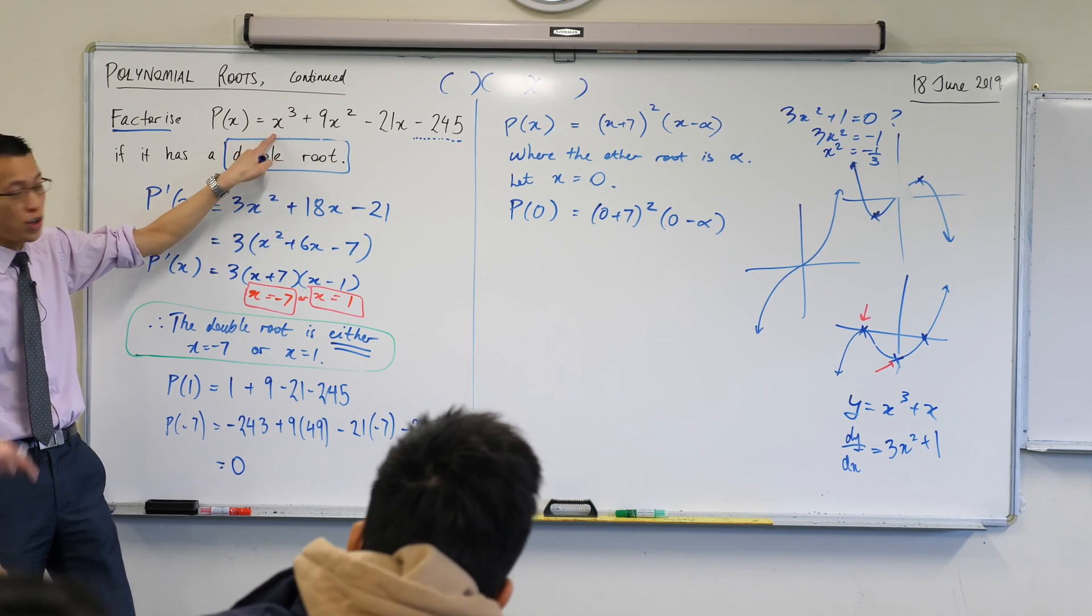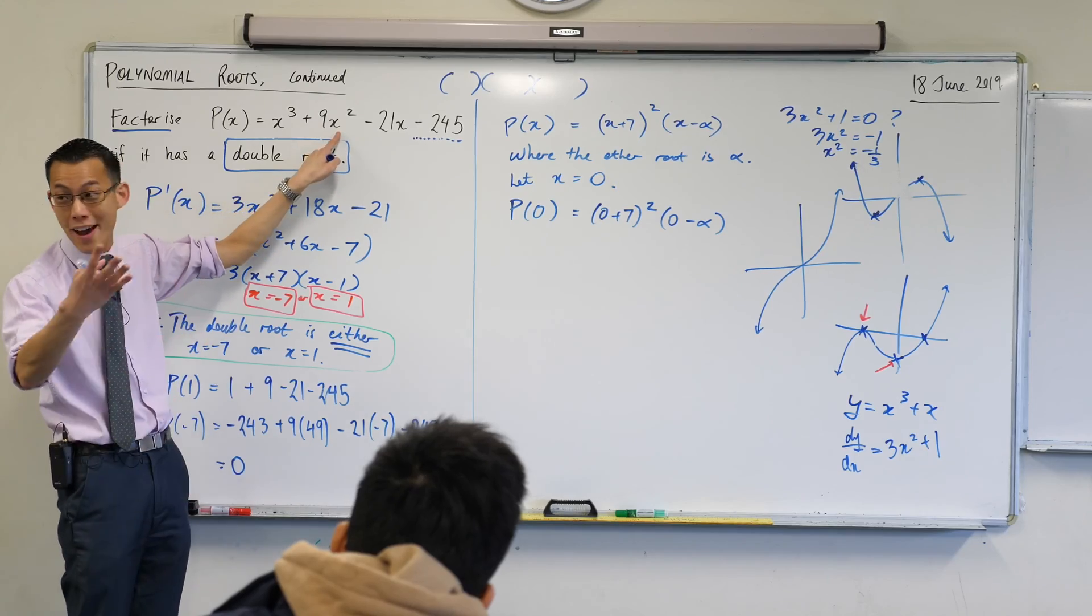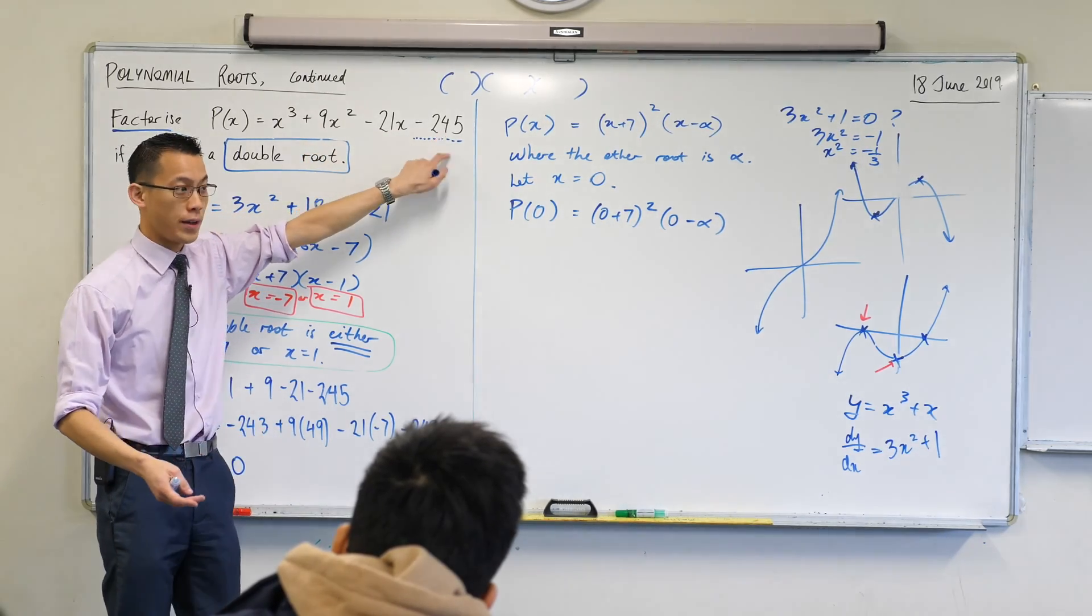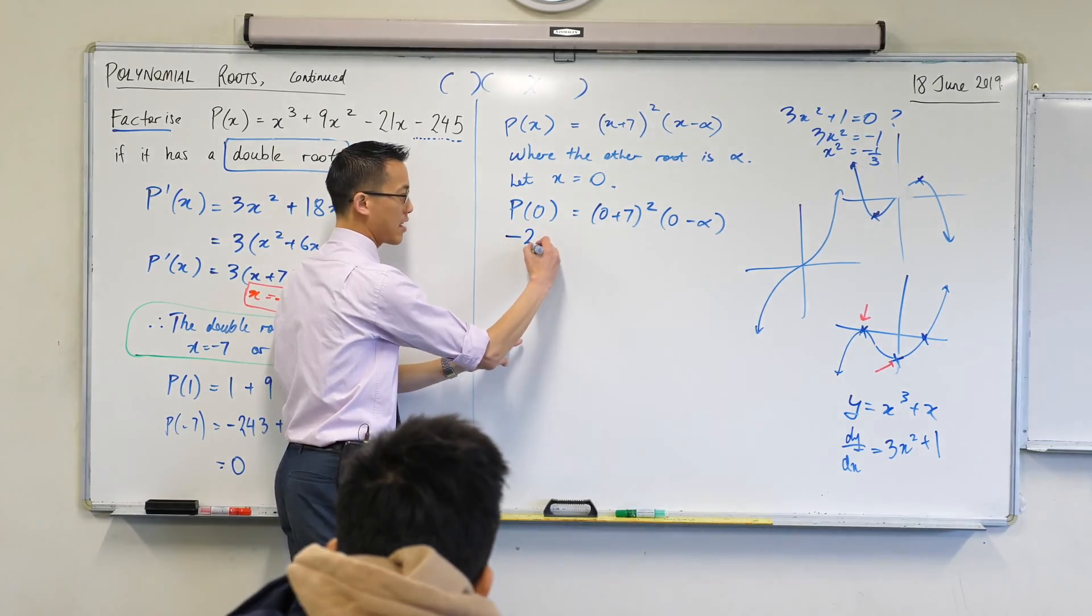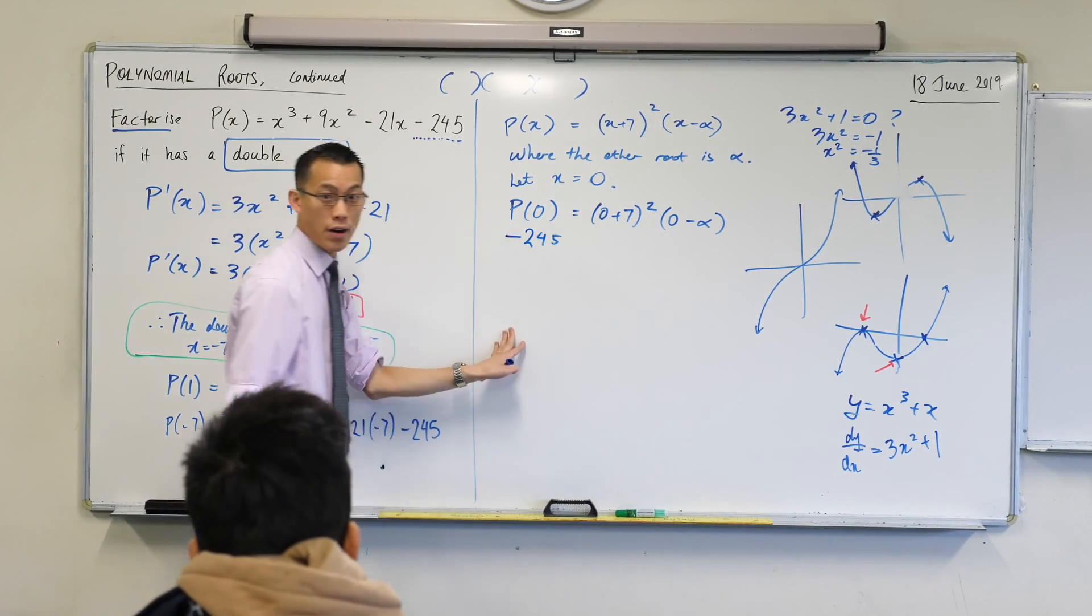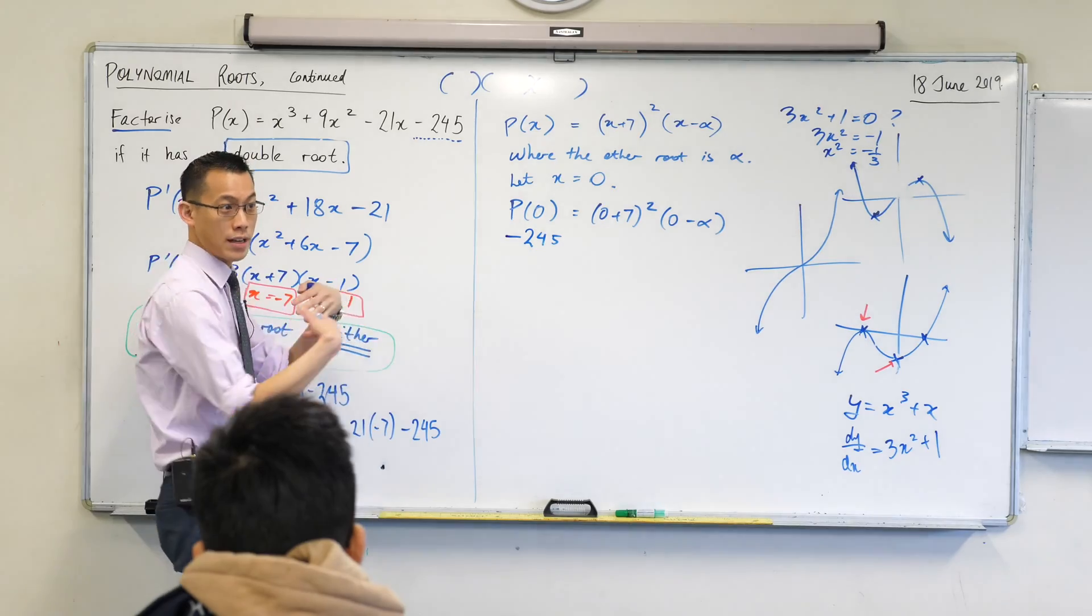They all vanish, right? Zero cubed, zero. Zero squared, zero, etc. All you get left with is this guy on the end here, right? So I'm going to have negative 245. Is that okay? That's what happened when I substituted zero in.